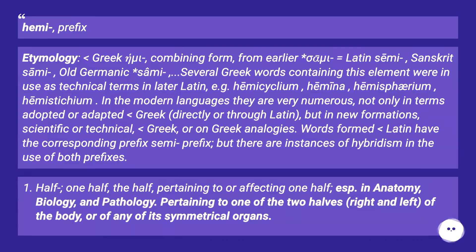Hemi- prefix. Etymology: Greek combining form, from earlier form, equals Latin smi, Sanskrit smi, Old Germanic sami. Several Greek words containing this element were in use as technical terms in later Latin — e.g., semicyclium, hemina, hemisphaerium, mysticum. In the modern languages they are very numerous, not only in terms adopted or adapted from Greek directly or through Latin, but in new formations, scientific or technical, on Greek analogies.